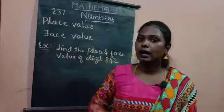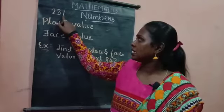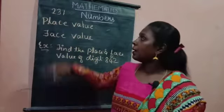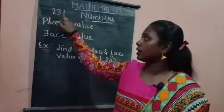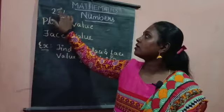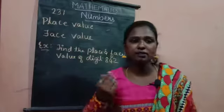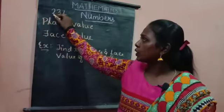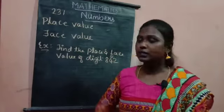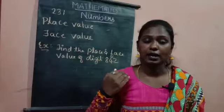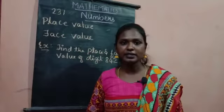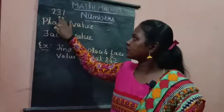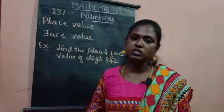Now, one is smaller than two and also smaller than three, and three is greater than both one and two. But in this case, the value of two is the highest because two is in the place of hundreds — so the place value of two is two hundred. The place value of three is thirty because it is in the place of tens, and the place value of one is one itself.